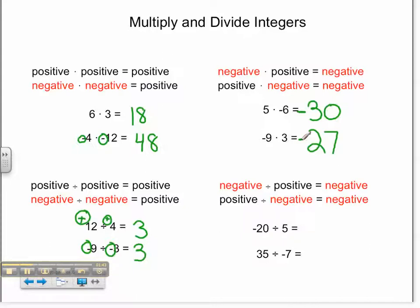For division, I do the same thing. I have negative 20 divided by 5. 20 divided by 5 is 4. Because the 20 is negative and the 5 is positive, my answer is going to be negative 4. For 35 divided by negative 7, I know 35 divided by 7 is 5. Because they have different signs — the 35 is positive and the 7 is negative — my answer is going to be negative 5.